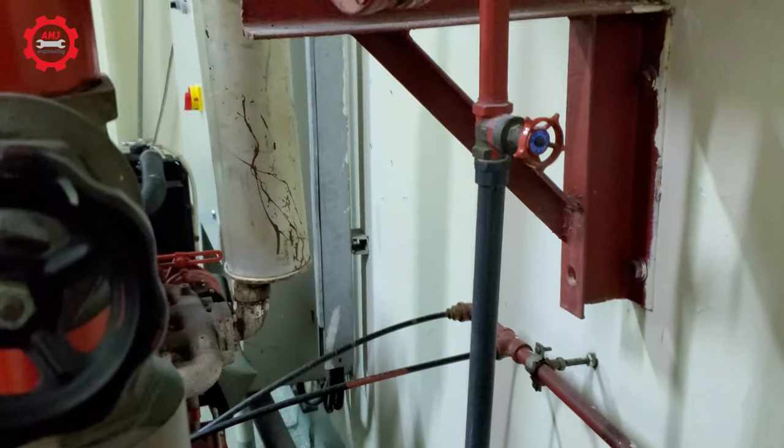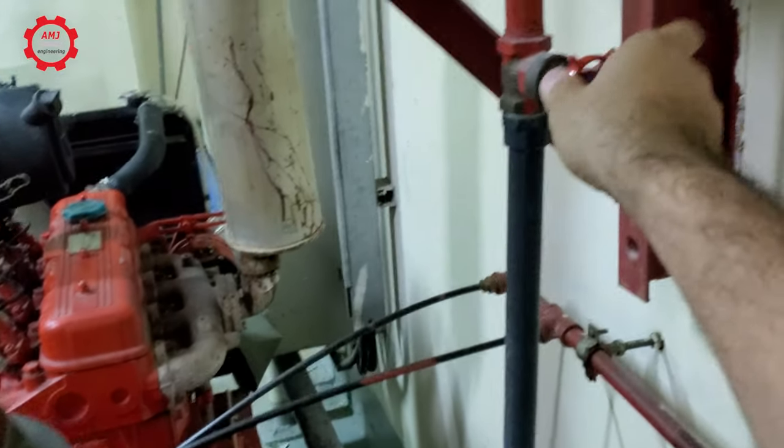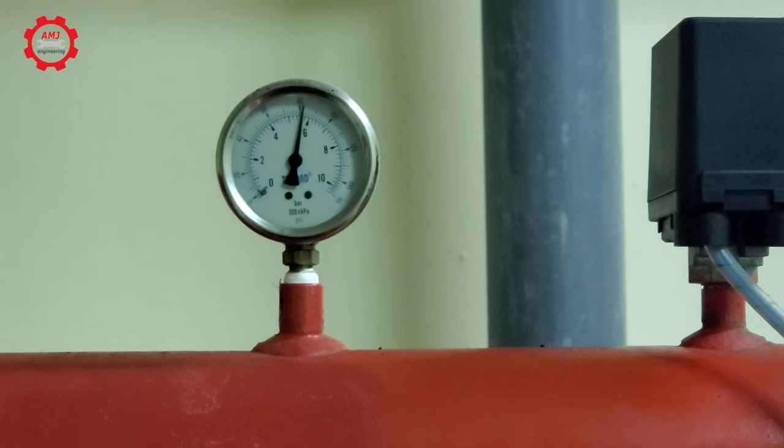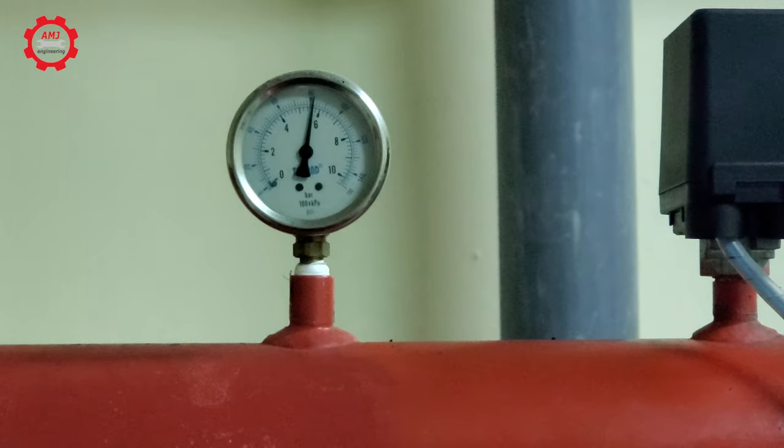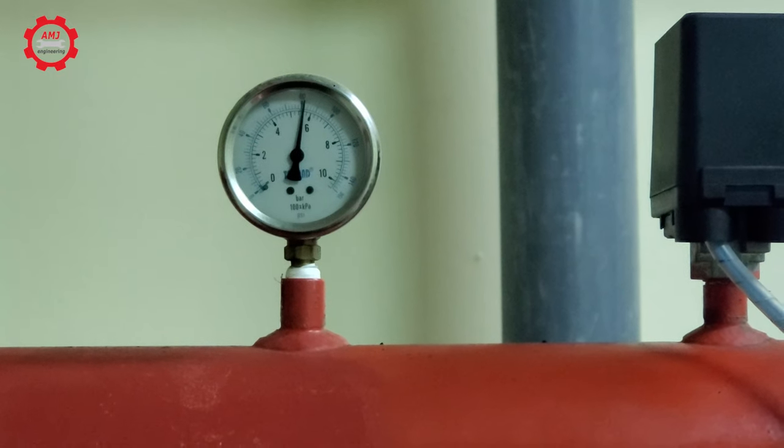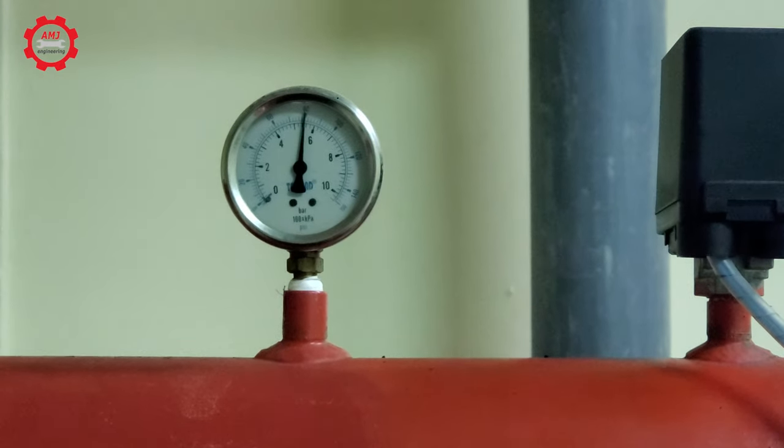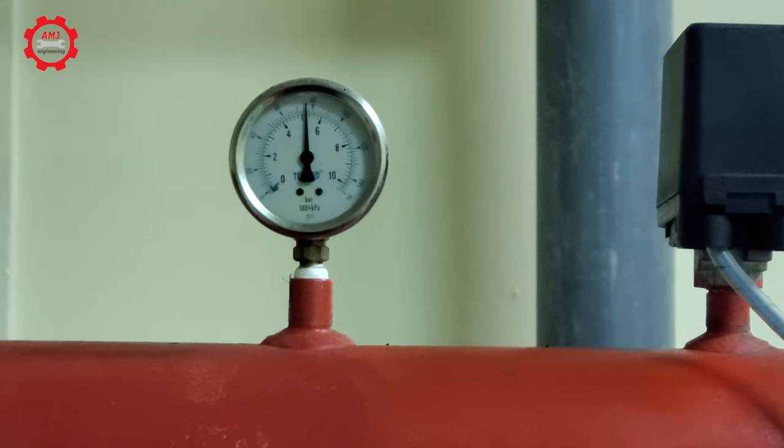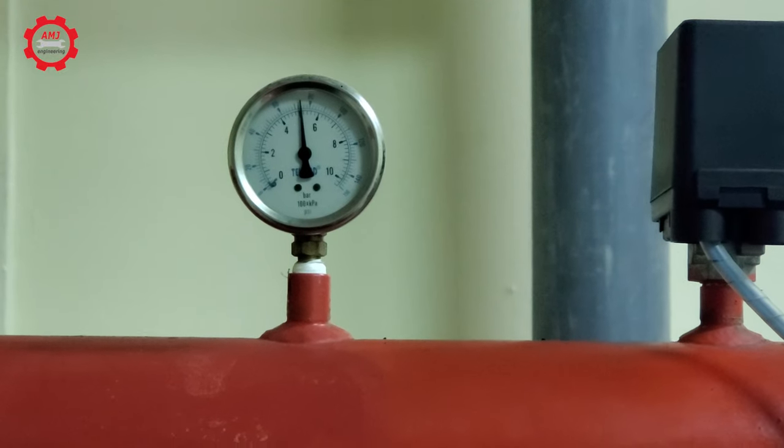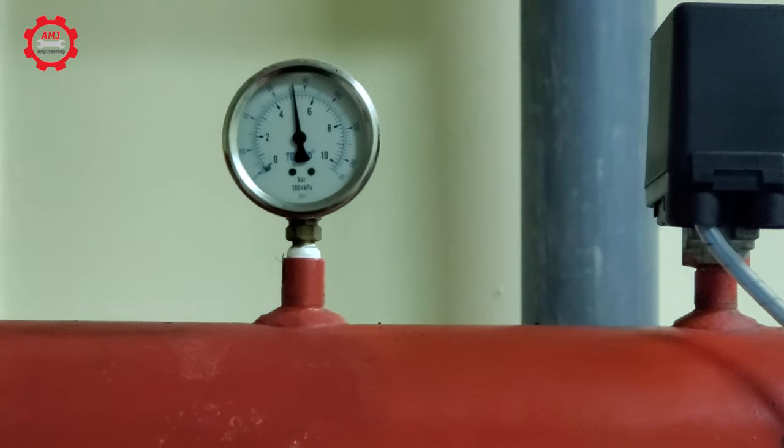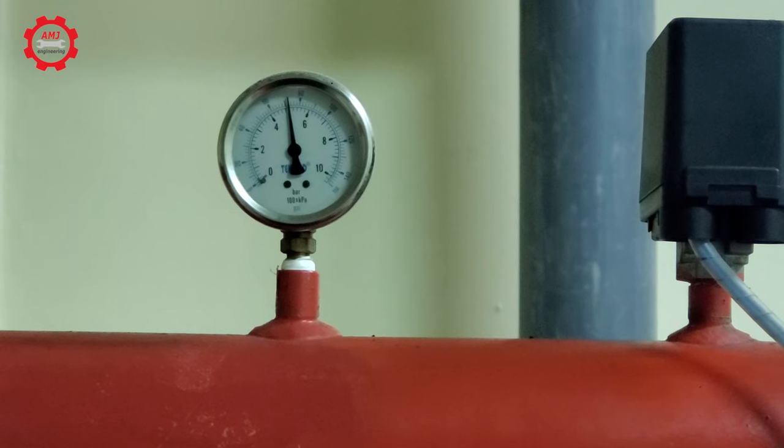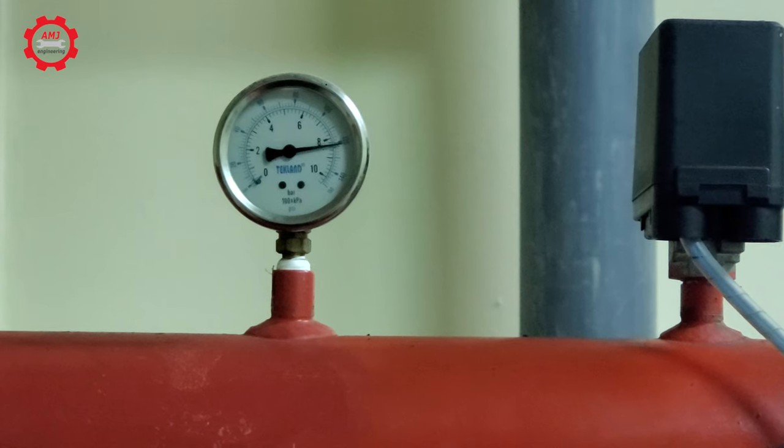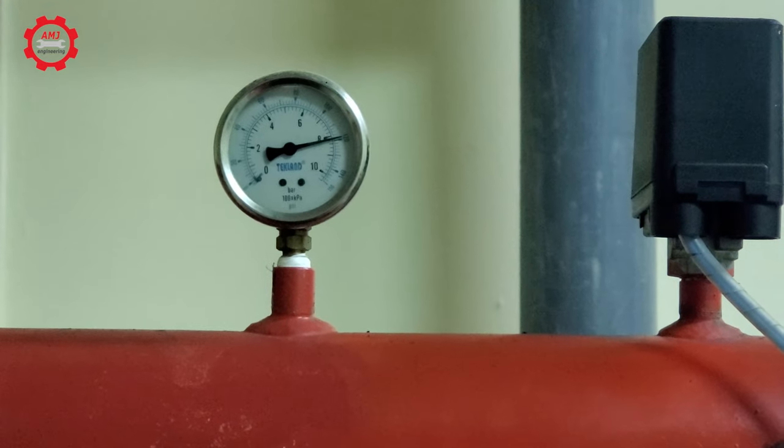I will open the test valve again and monitor what is going to happen. The pressure continues to drop beyond 5.3 bars as you can see, and no pump will start because the jockey pump controller is put on off position. When the pressure reached 5 bars, the preset cut on pressure of the main pump, the main pump starts automatically and stops automatically at the cut off pressure settings.